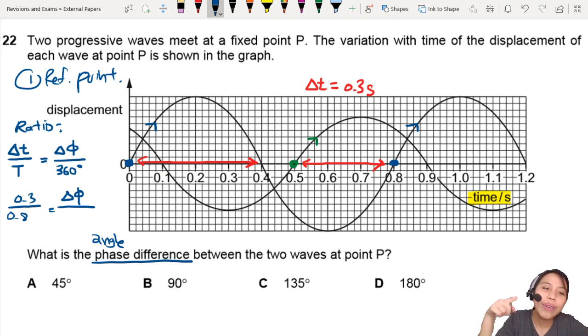We're trying to find that, so 360. You can find that the angle difference or phase difference will be 0.3 divided by 0.8 times 360. That's 135 degrees. That's the answer. Very nice.